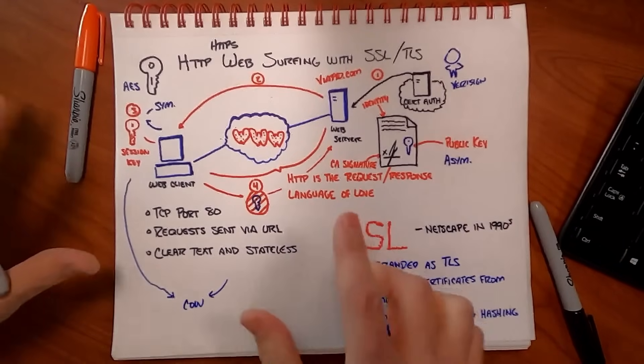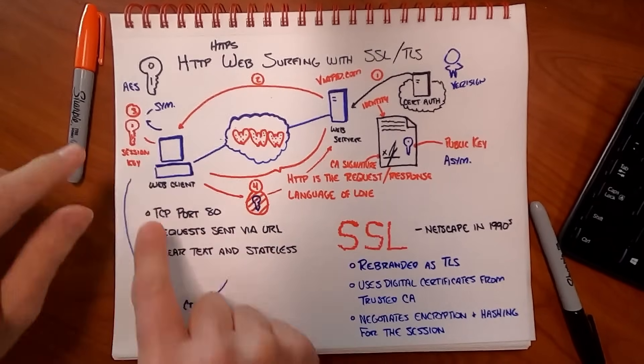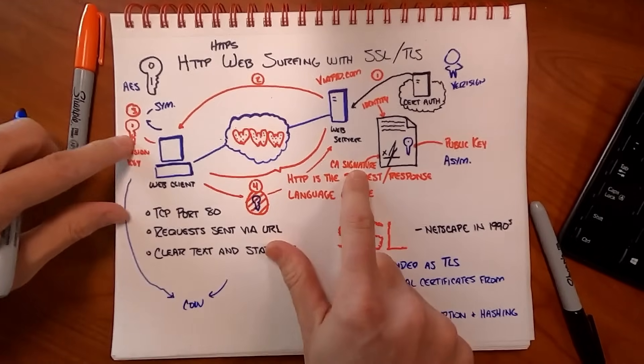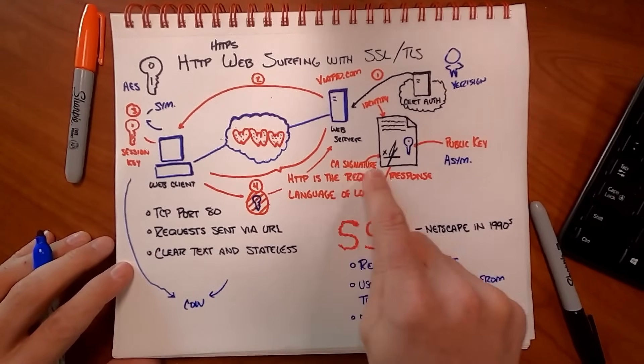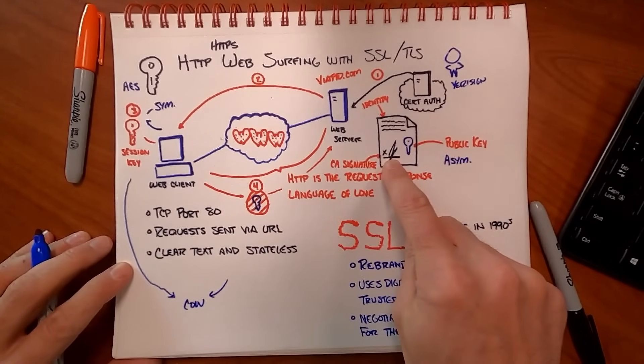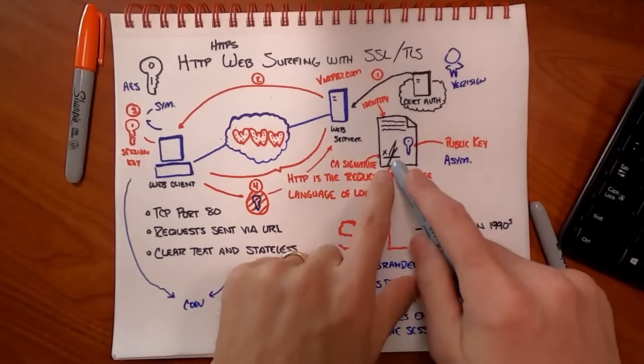That's why I spend so much time on this — if you get that, you know how almost all encryption works across public networks. Let me make sure I've hit the key points. I mentioned the CA signature earlier. This is not critical to the encryption process itself, but it's really good to know because it'll make a lot of other stuff make sense. What is that signature?